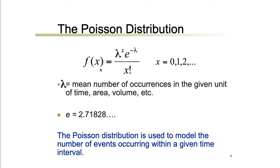f of x is equal to lambda to the x times e to the negative lambda, divided by x factorial, wherein x ranges from 0, 1, 2, so on and so forth. We don't know up until which value of x we're going to consider, because for certain values of x the probabilities will be negligible.